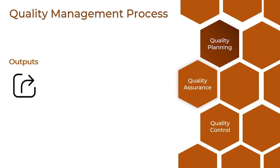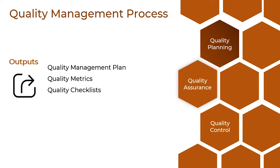Coming to the outputs, we have a quality management plan as our first output. It is a well-defined set of documentation and information for managing software quality throughout the development process. Then we have quality metrics and quality checklists, followed by a quality management plan and quality baseline.